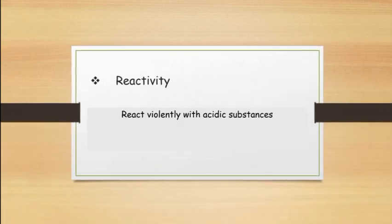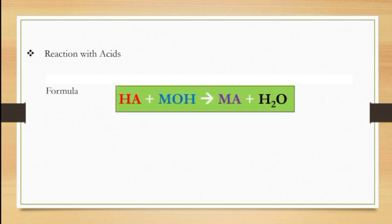Bases' reactivity: concentrated or strong bases are caustic or corrosive on organic matter and react violently with acidic substances. Reaction with acids: bases react with acids to form salt and water. This reaction is called neutralization. In the formula, the red color represents acid, blue represents base, purple represents salt, and black represents water. So when acids react with bases, the products are salt and water.